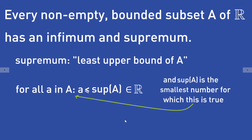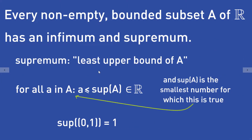On the other hand, the supremum of a subset A is the least upper bound of a subset A. This means for every element a in the subset A, a is smaller or equal to the supremum of A, which is a real number. And the supremum of A is the smallest number for which this is true. The supremum of A doesn't have to be an element of A. For example, the supremum of the open interval (0, 1) is equal to 1, and 1 is not an element of the open interval (0, 1).